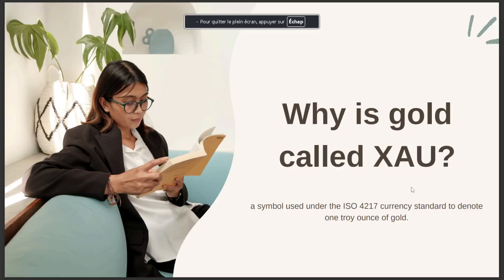In today's video we're going to talk about why gold is called XAU. The answer is that XAU is a symbol used under the ISO 4217 currency standards to denote one troy ounce of gold.